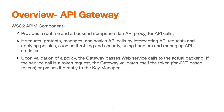After the validation of a policy, the Gateway passes the web service call to the actual backend. If the service call is a token request, the Gateway validates itself the token for JWT-based tokens. In case of OPAC tokens or third-party key managers, it passes the request directly to the key manager.